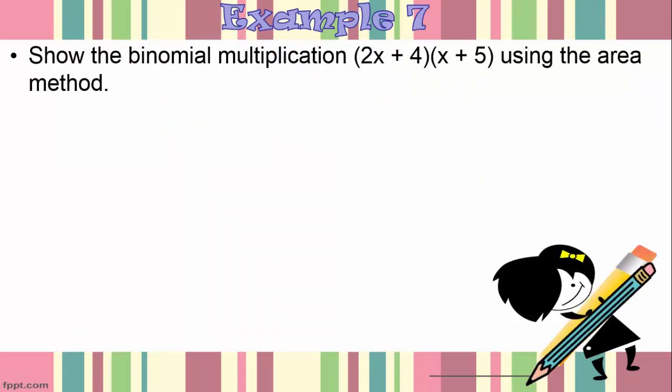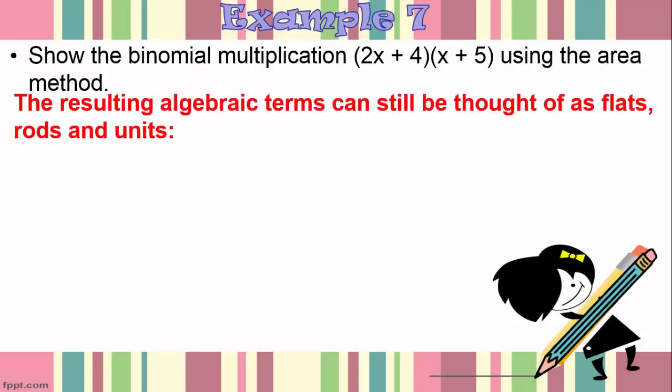In example number 7 we're asked to show the binomial multiplication of 2x plus 4 times x plus 5 using the area method. The resulting algebraic terms can still be thought of as flats, rods and units.